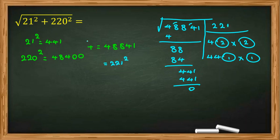So this number is 221 squared, and square root of that is 221. And our answer is this.